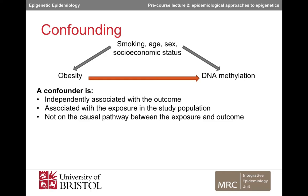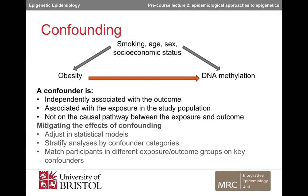As with all observational studies, it's important to measure data on potential confounders in epigenetic studies and control for them, either by adjusting for them in statistical models, stratifying analyses by confounder categories, or matching participants in different groups on key confounders. Most commonly, we adjust for confounders by including them in statistical models.